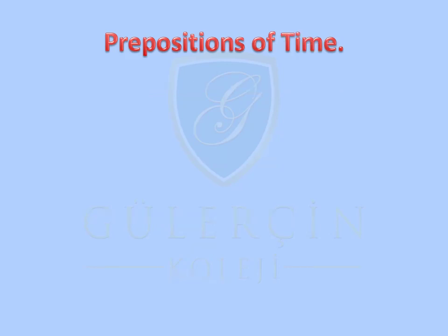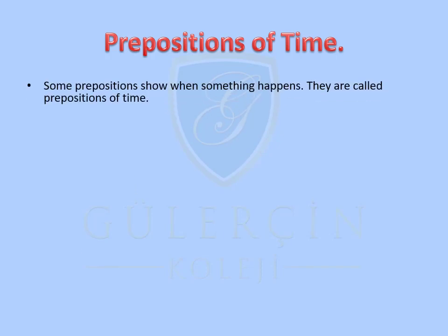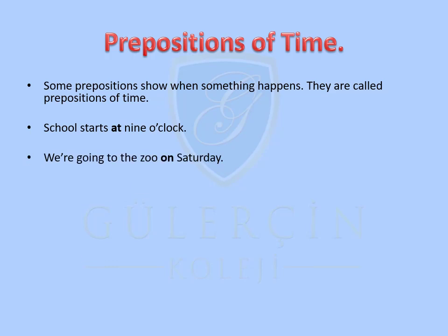Propositions of time: Some propositions show when something happens. They are called propositions of time. Some examples: School starts at 9 o'clock. We are going to the zoo on Saturday.